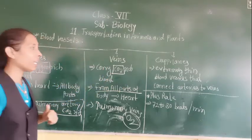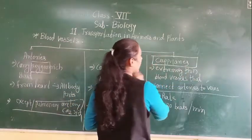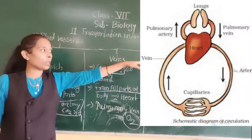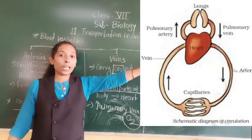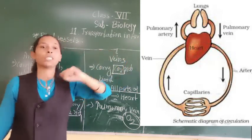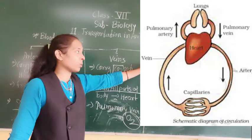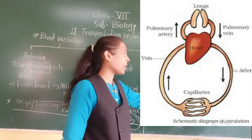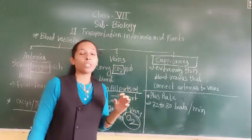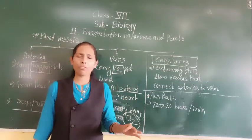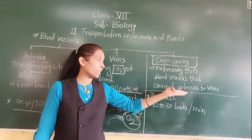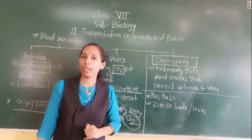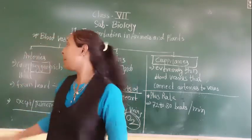Now we will discuss the next blood vessels, called capillaries. Looking at the diagram, you can see fine fiber-like lines that come together and bind. Those lines are nothing but capillaries. Capillaries are extremely thin blood vessels that connect arteries to veins. So these are the three blood vessels: arteries, veins, and capillaries.